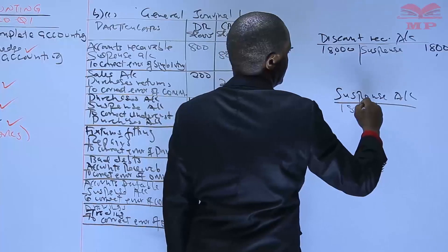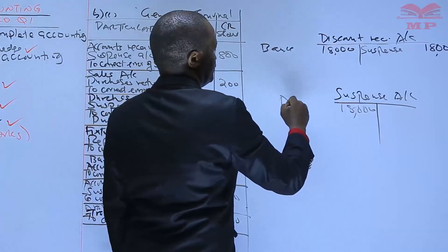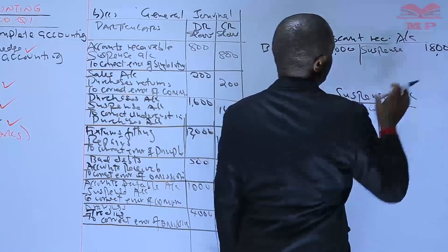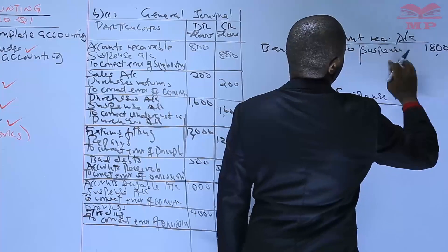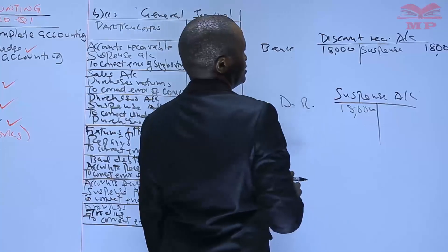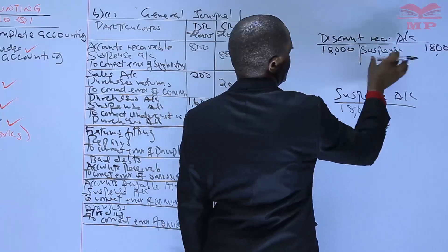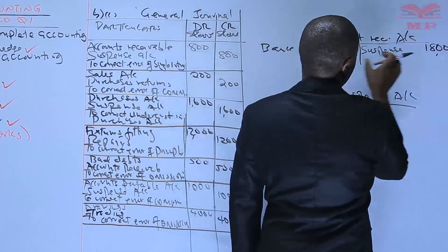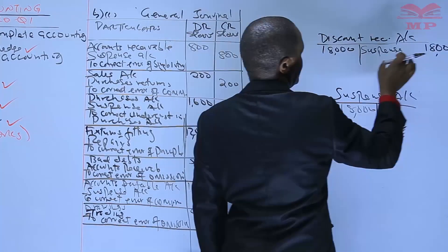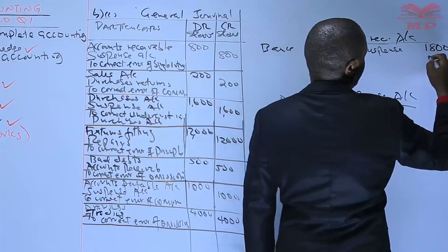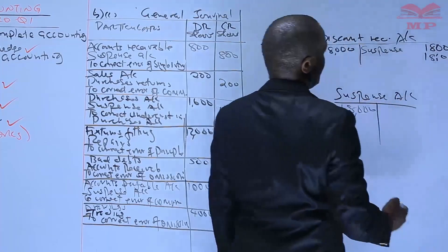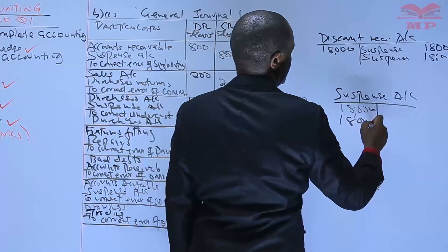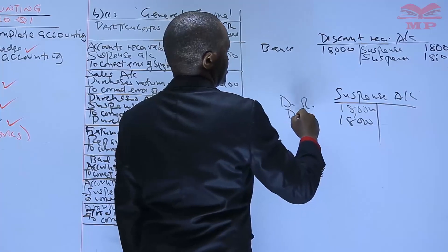We are going to credit the discount received account with 18 million and take that to the suspense account. By making these two entries we cancel out the mistake — we've removed this amount from the wrong side. Then we correct by making a similar entry: 18 million credited to discount received, taken to suspense.